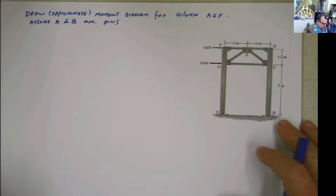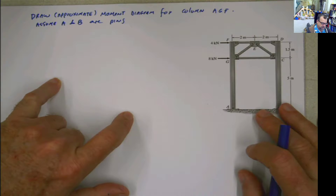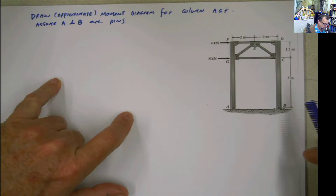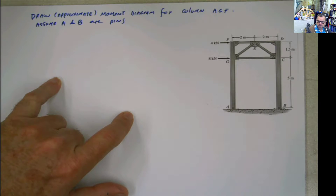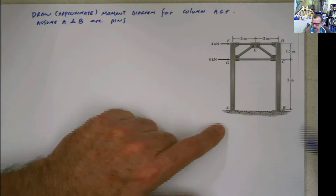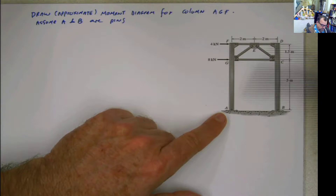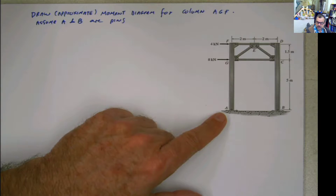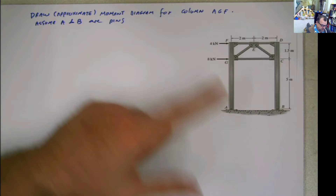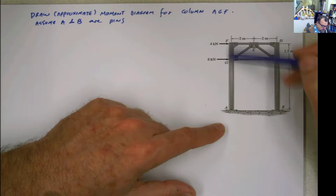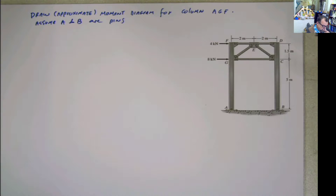Hello guys. So today I'm going to solve this problem. It's kind of an approximate method problem, but it's a very important example for several reasons. The first reason is you have a combination of columns and trusses, which is a real-life situation. This is what you see a lot of times. How do you treat this? Is this a truss? Is this a column? What is this part — is this member part of the truss?